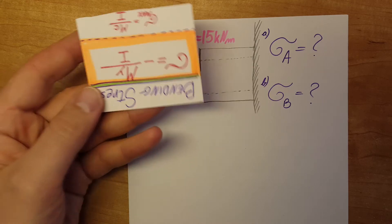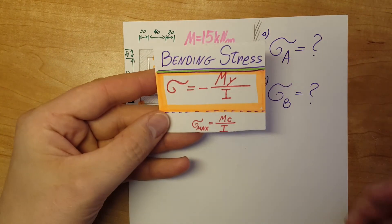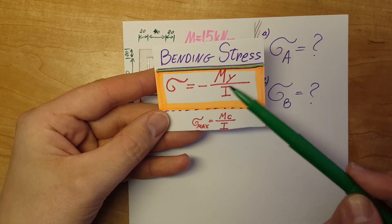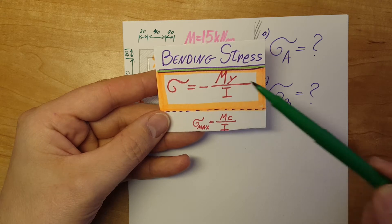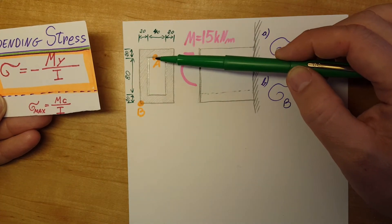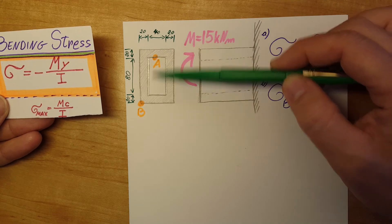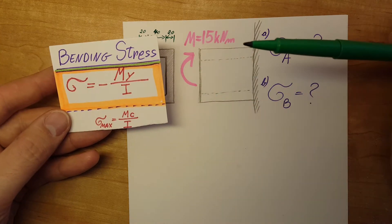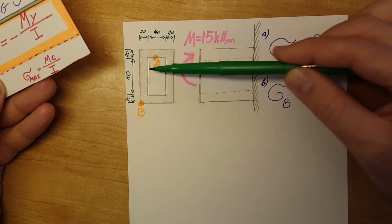Since this is a bending problem, we're going to be relying on this formula. The stress equals negative of the moment times Y, and Y will be the distance from the neutral axis to point A or point B, and then I is the moment of inertia of this shape.